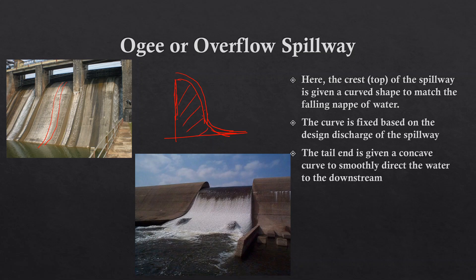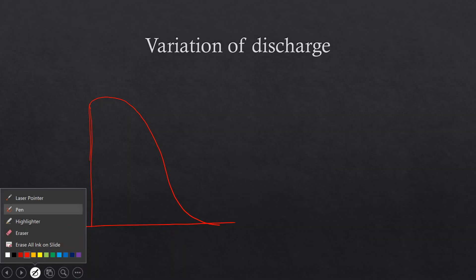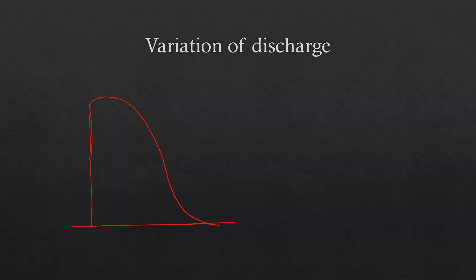This means water doesn't have a very large impact directly on the bottom of the river. One interesting thing about the OG spillway is that at the design discharge, since the spillway profile coincides with the falling nappe, the water does not exert any pressure on the spillway surface — pressure at that point equals atmospheric pressure.